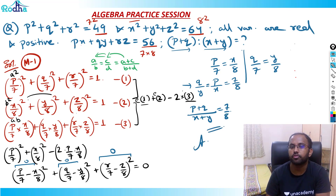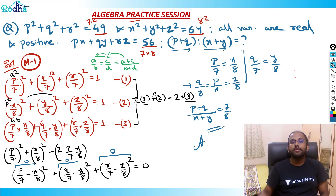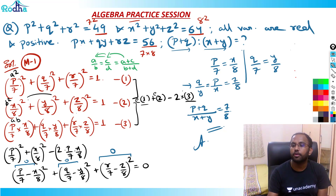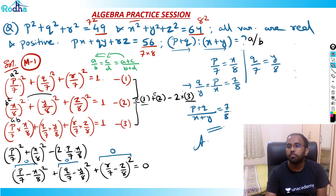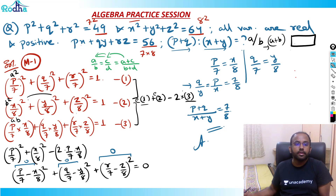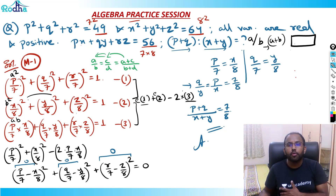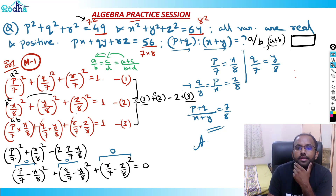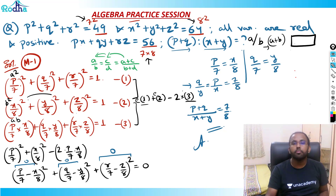7/8 is the answer for this question. That's the first method. The main point to observe was that 49 = 7², 64 = 8², and 56 = 7 × 8. This is the standard algebraic form we need to recognize.